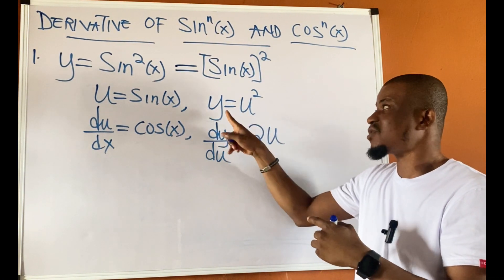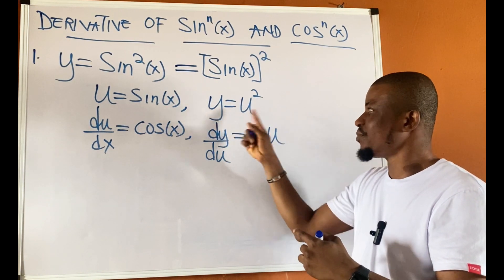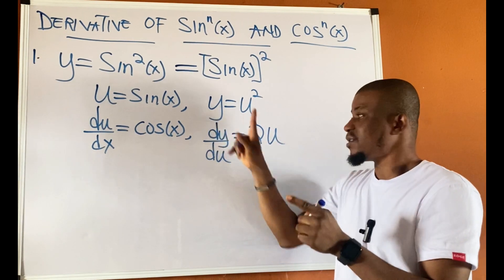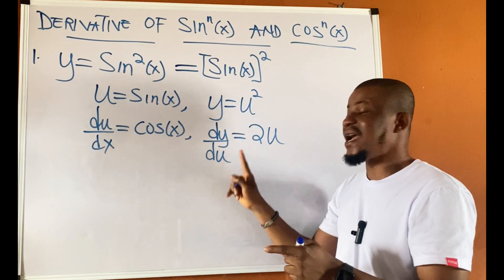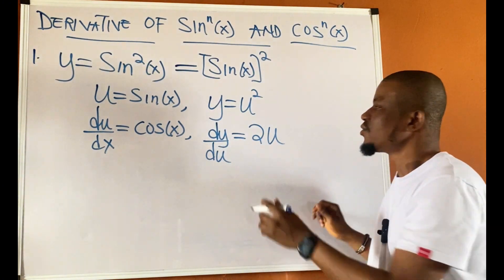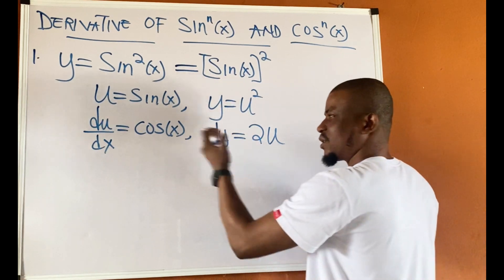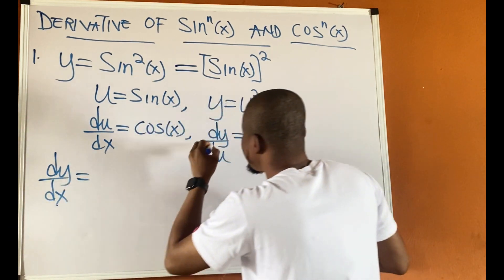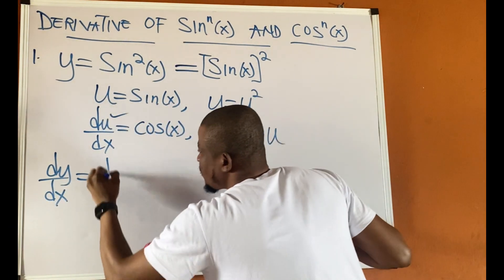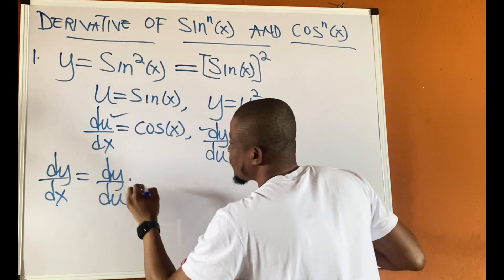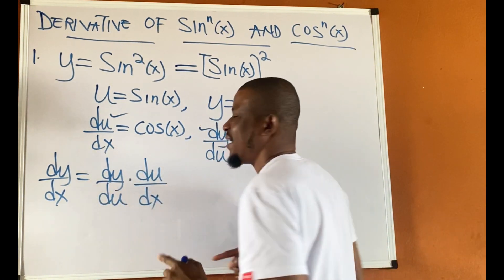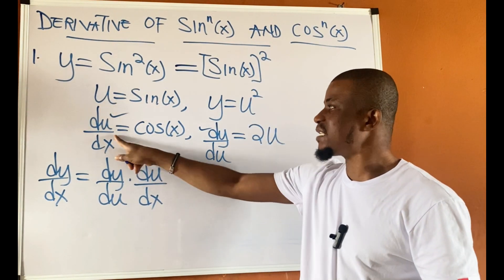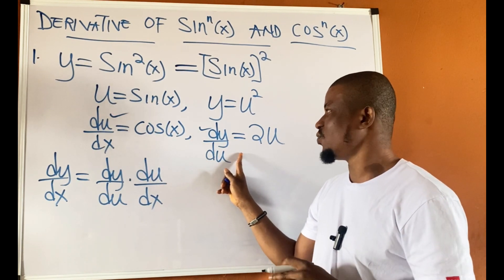Remember, y is dependent on values of u. This is y equal to u squared, not y equal to x squared — it's a relationship between y and u. So if I want to differentiate y, I differentiate with respect to u and not x. That's why I have dy/du. The next step is to find dy/dx by multiplying these two derivatives.